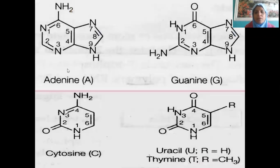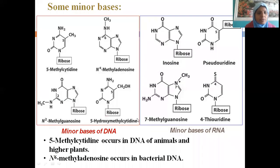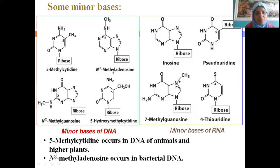The structures of adenine, guanine, cytosine, and uracil are shown for reference. There are also minor bases of DNA and RNA: 5-methylcytidine, N6-methyladenosine, N2-methylguanosine, and 5-hydroxymethylcytidine are derived from DNA. 5-methylcytidine commonly occurs in the DNA of animals and higher plants, whereas N6-methyladenosine occurs in bacterial DNA.